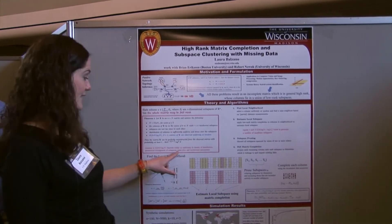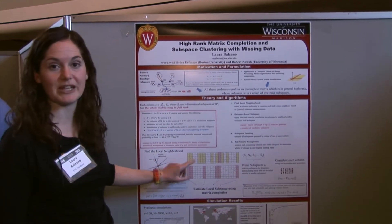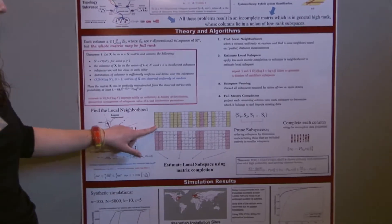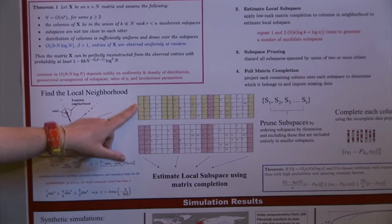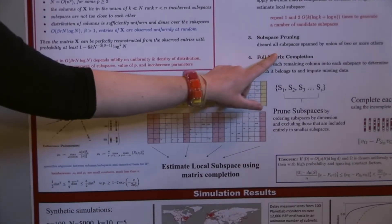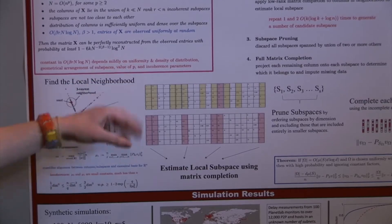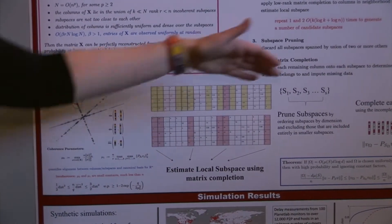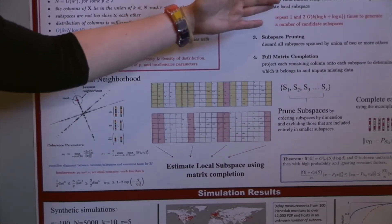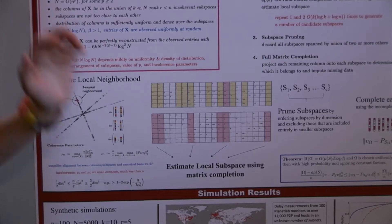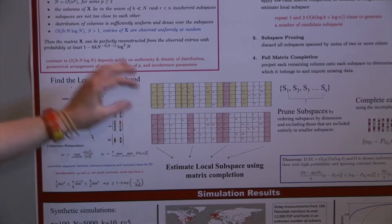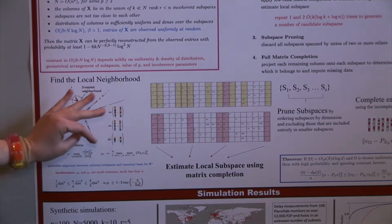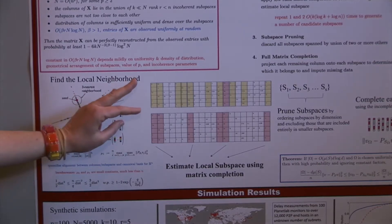The matrix here would be a long matrix where you have monitors on the rows and IP addresses on the columns. So you have maybe 100 rows and maybe 1 million, 10 million, or 100 million columns — it's a very, very long fat matrix. And many of the entries are unknown in this matrix.